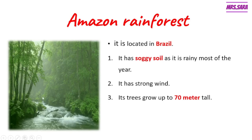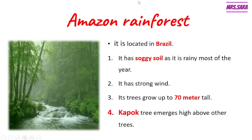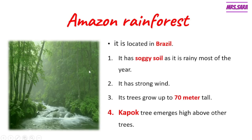The trees of Amazon Rainforest grow up to 70 meters tall. We can find a type of tree called kapok tree in Amazon Rainforest. Kapok tree emerges high above other trees, covering the other plants and growing above them, making it impossible for other trees to reach the sunlight. So in Amazon Rainforest you can find soggy soil, strong wind, and tall trees that reach up to 70 meters tall, like the kapok tree.